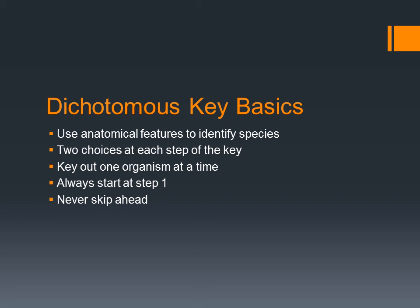Some things to note as you're using a dichotomous key. First of all, key out one organism at a time. If you have multiple organisms to key out, pick one of them, key it all the way to species, then go back for another. Another important point is to always start at step one — never skip ahead. Sometimes there are pictures that go with the key and it's tempting to match things up based on the pictures, but you can miss really important points doing that. So start at step one and take your time going through each step.